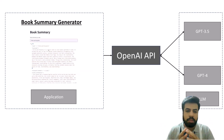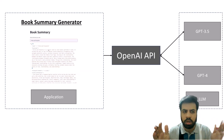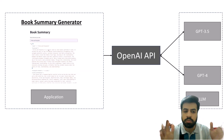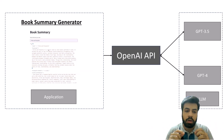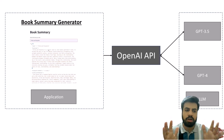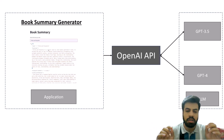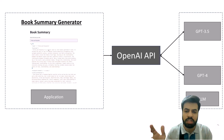For example, if I want to create a book summary generator application, the user will write the name of a book like 'Alchemist' and our application will generate a summary of that book, so the user can decide whether to read it. This Streamlit app uses the same architecture as ChatGPT — it internally calls the OpenAI API which uses GPT-3.5 or GPT-4.